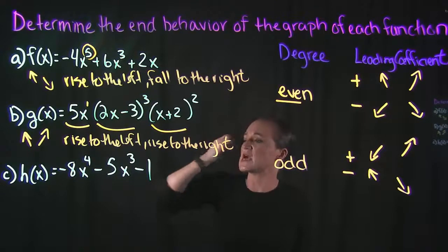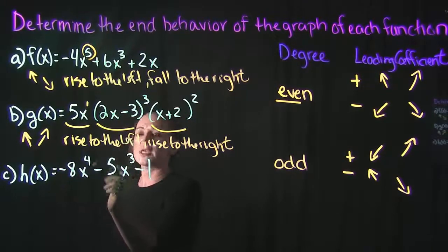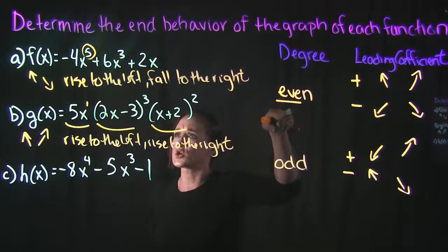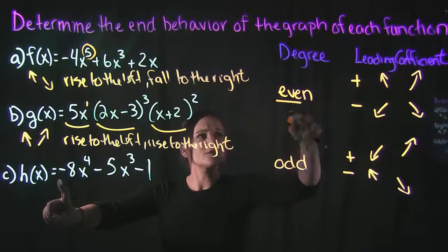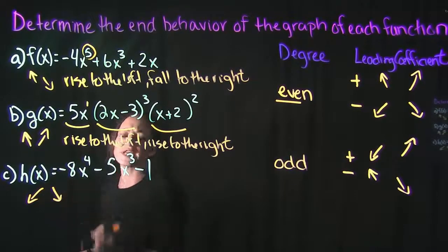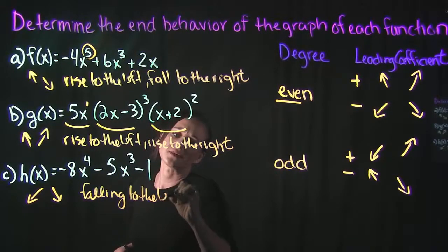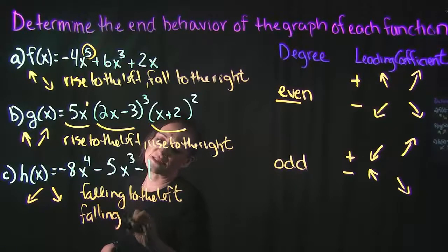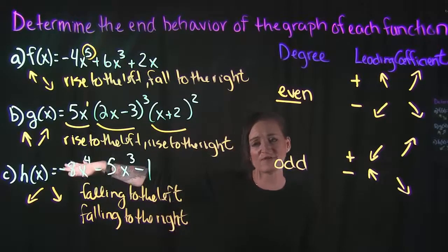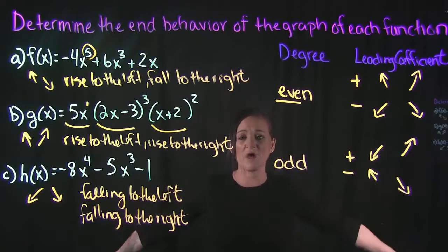For Example C, there's nothing that needs to be multiplied or simplified. It's just a matter of looking at the leading coefficient and the highest power, which is a four — so that is an even degree. The leading coefficient is negative. For an even degree with a negative leading coefficient, it's going to be falling to the left and falling to the right. Or, as x goes to negative infinity, it's going to be decreasing; as x goes to positive infinity, it's going to be decreasing. So it's going to be falling on both sides.